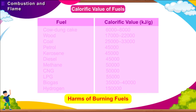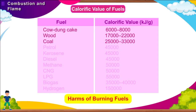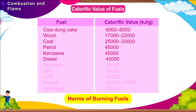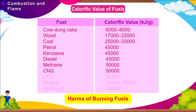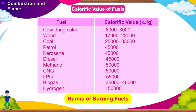Continuing the calorific value table: methane 50,000; CNG 50,000; LPG 55,000; biogas 35,000–40,000; hydrogen 150,000 kilojoules per gram.